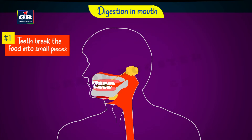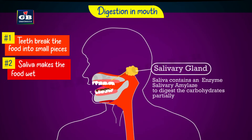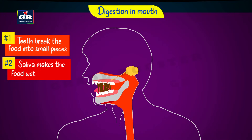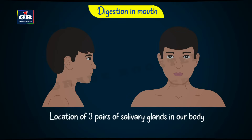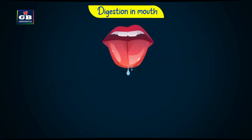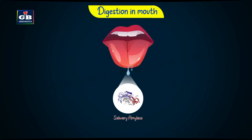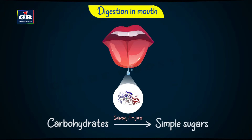Teeth break the food into smaller pieces. Saliva makes the food wet. The tongue helps in mixing the food well with saliva and makes it into bolus. Saliva is a liquid secreted by three pairs of salivary glands present in our mouth. Saliva has an enzyme called salivary amylase, or ptyalin, which digests carbohydrates like starch into sugars.